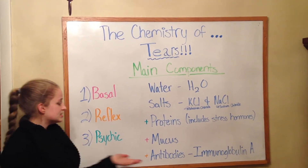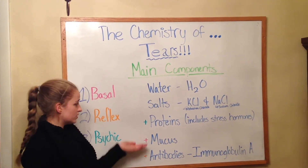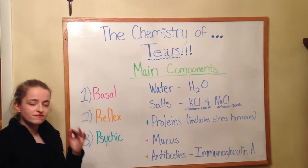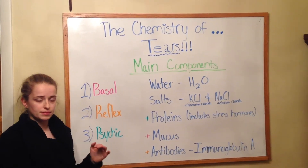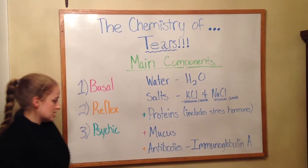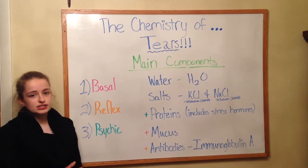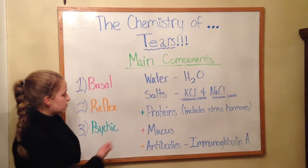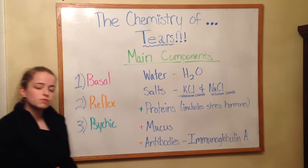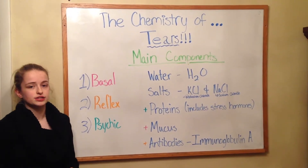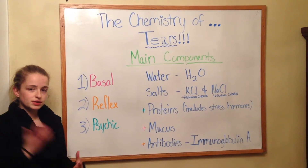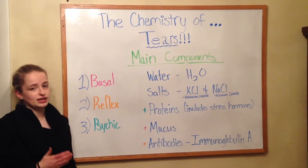Reflex tears contain more antibodies and less mucus and proteins, because the antibodies are what fight the foreign chemicals. Immunoglobulin A is the primary antibody. For psychic tears, they contain more proteins, including the stress hormones, which is why when you cry psychic tears, you feel relief — because it gets rid of stress and depression.